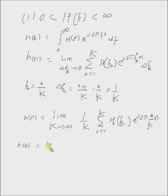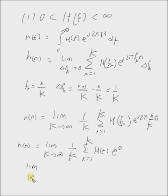h of 0 equals limit k tends to infinity 1 by capital K, summation k equals 1 to capital K h of f k. Note that f k can be replaced with the index k, and this basis function becomes e power 0, that is 1.